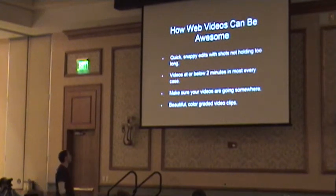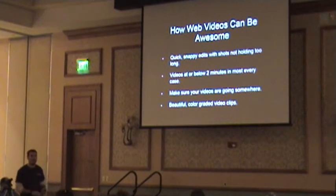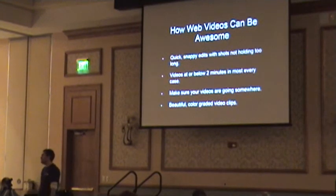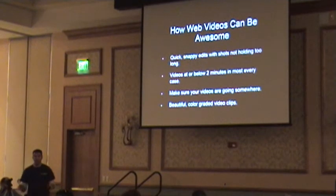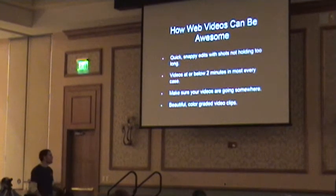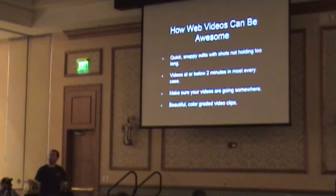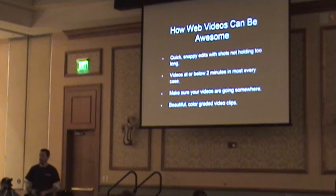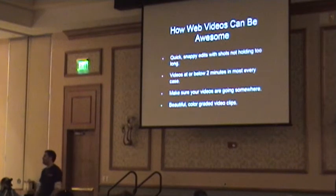How can they be awesome? Quick, snappy edits with shots not holding too long. If you watch the best web videos, these people are masters at editing. You're going to have shots that are two to four, maybe six seconds. Sometimes you get awesome timelapses that should be held for 10 or 11 seconds, but I'll introduce a subtle zoom in Final Cut — zoom in slightly or zoom out slightly — just to add a little bit of movement. The big thing about video is you always want to have something moving in the frame. If everything is still, it looks like a photo.